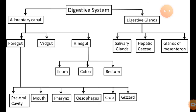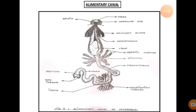The foregut contains the pre-oral cavity, mouth, pharynx, oesophagus, crop, and gizzard. On the other hand, the digestive glands include the salivary glands, hepatic caeca, and the glands of the Malpighian tubules. All these glands play a very important role.